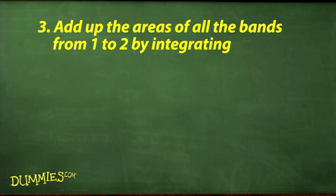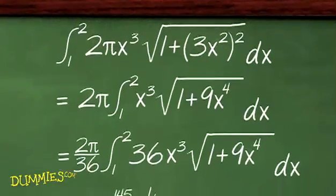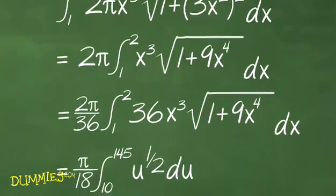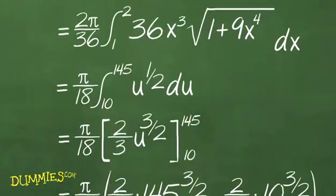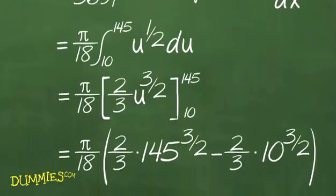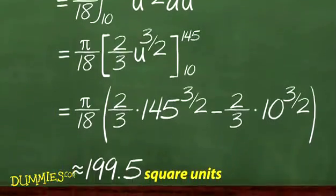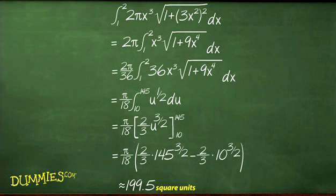Now, add up the areas of all the bands from 1 to 2 by integrating. The 36 is the tweak amount for the u substitution. Tweak is just a fancy way of saying, adjusting the constraints to fit. With u equals 1 plus 9x⁴, du equals 36x³ dx. When x equals 1, u equals 10. When x equals 2, u equals 145. With these steps, you can solve problems just like these in the future.